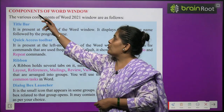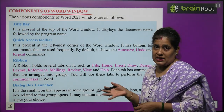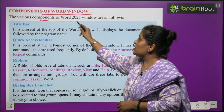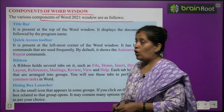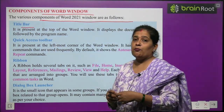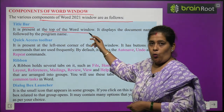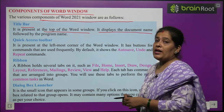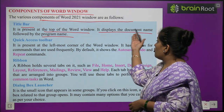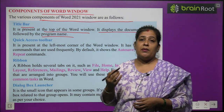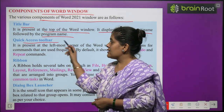Now we will learn about the components of MS Word. The various components of MS Word 2021 window are as follows. First, the Title Bar — it is present at the top of the word window. It displays the document name followed by the program name. When you open MS Word, it will show 'MS Word' written there. Then the Quick Access Toolbar — it is present in the leftmost corner of the word window.